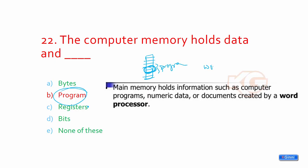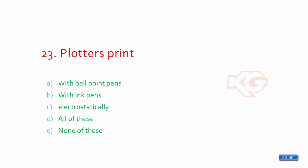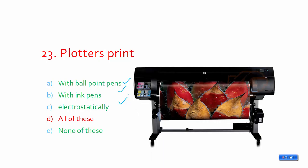Plotters print using what? Ball pen, point pens with ink, or electrostatically? The moment you see all of these, you need to be very cautious. You should not stick to a single option. A, B, C - all three are correct. So the option you need to choose in this scenario is all of these. You can see the image of how the plotters look. They are very big printers which print big sceneries, maps, and other important stuff which cannot be printed on home desk printers.